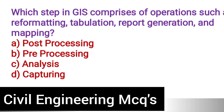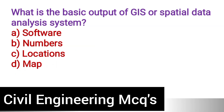Next question: Which step of GIS comprises operations such as reformatting, tabulation, report generation, and mapping? Option A: Post-processing. Option B: Pre-processing. Option C: Analyzing. Option D: Capturing. The correct answer is option A, post-processing. In GIS, the last step is post-processing — after collecting the data, we reformat, tabulate, and generate reports.